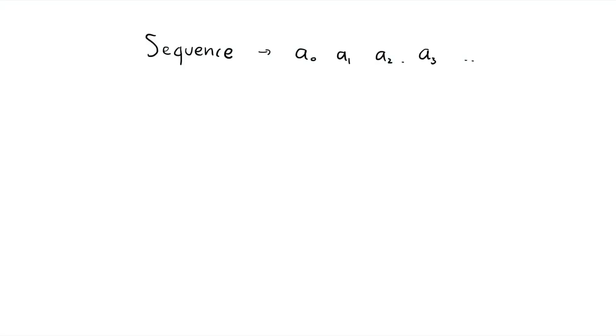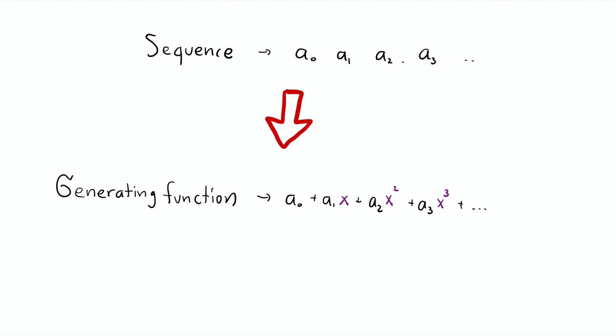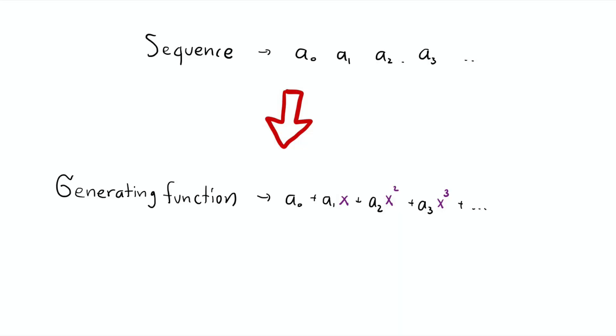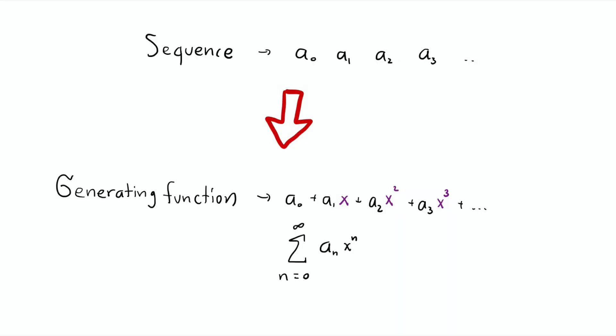So what do we do? Well, we already have a sequence: a₀, a₁, a₂, a₃. So we turn that sequence into a generating function. Remember, a generating function is a fancy way to record the sequence: a₀ plus a₁x plus a₂x² plus a₃x³, so on and so forth. To make our life convenient, we're going to write the sum from 0 to infinity of aₙ xⁿ, and we will call that generating function big A. The purpose is we're going to start from the recursive formula and figure out what big A is.